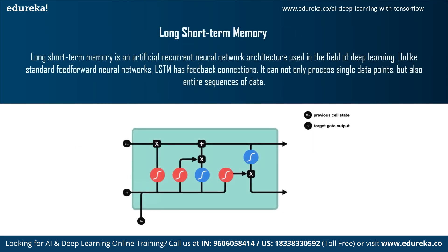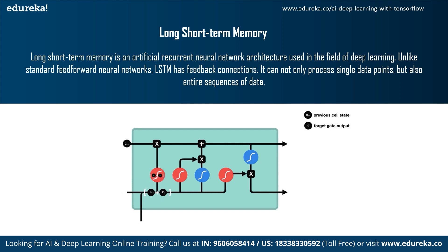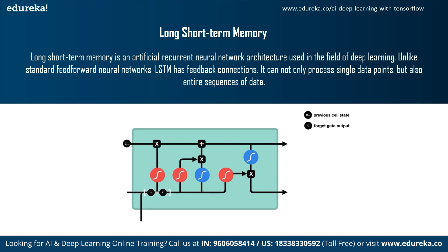The next upgrade is Long Short-Term Memory, or LSTM. LSTM is an artificial recurrent neural network architecture used in deep learning. Unlike standard feedforward neural networks, LSTM has feedback connections — it can process not only single data points but entire sequences of data. With LSTM we can feed longer sequences compared to basic RNNs or bi-directional RNNs. Moving from RNN to LSTM introduces more control over the sequence of data, giving better controllability and better results.